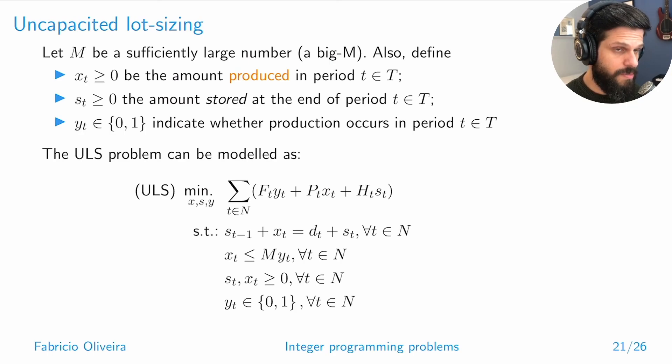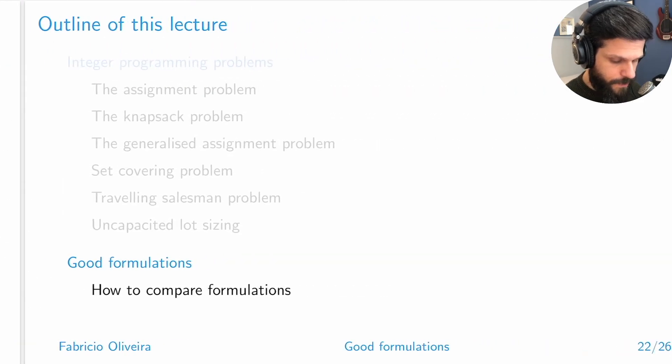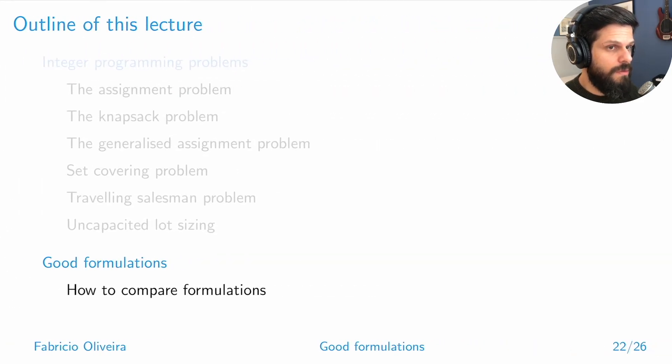This is it in terms of examples. I think that gives you a very good collection of examples that have most of the special features you'll see in mixed integer programs. We'll have a chance to practice with a few more in the exercise sessions, but for now we'll stop here. In the next video, we're going to look into the notion of good formulations: what makes a mixed integer programming formulation good, and how do we compare formulations in terms of saying which one is better. See you in the next video.